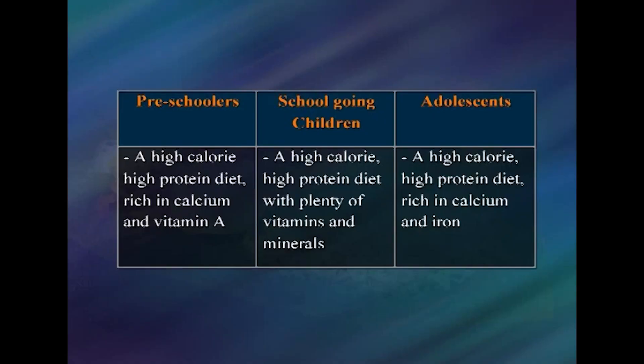Modification for children and adolescents: A well-balanced diet must be given to all age groups. For a preschooler, a high-calorie, high-protein diet rich in calcium and vitamin A should be given. School-going children should be given a high-calorie, high-protein diet with plenty of vitamins and minerals. Adolescents require a high-calorie, high-protein diet rich in calcium and iron.